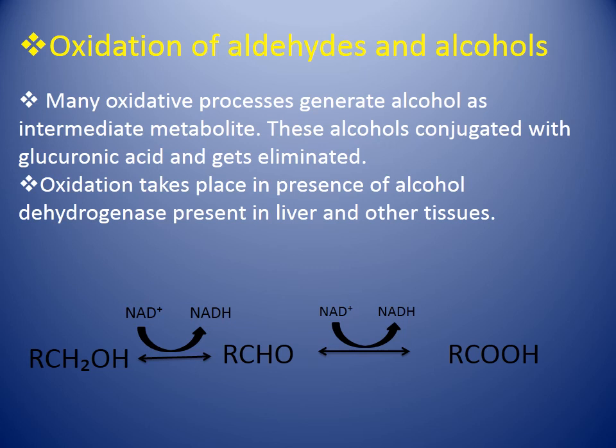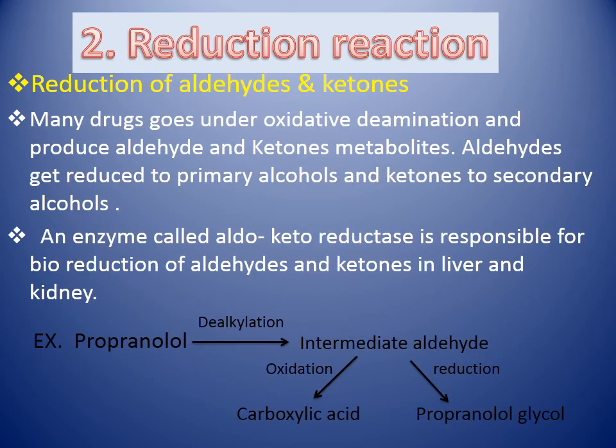Coming to the oxidation of aldehydes and alcohols. Many oxidations generate alcohol as an intermediate metabolite. These alcohols conjugate with glucuronic acid and get eliminated. If not conjugated, these alcohol products are further oxidized to aldehydes or ketones, and these aldehydes and ketones are oxidized to carboxylic acid. Oxidation takes place in the presence of alcohol dehydrogenase, which is present in the liver and other tissues. As shown in the reaction, an alcoholic group is changed to an aldehyde group which is further oxidized to carboxylic acid.